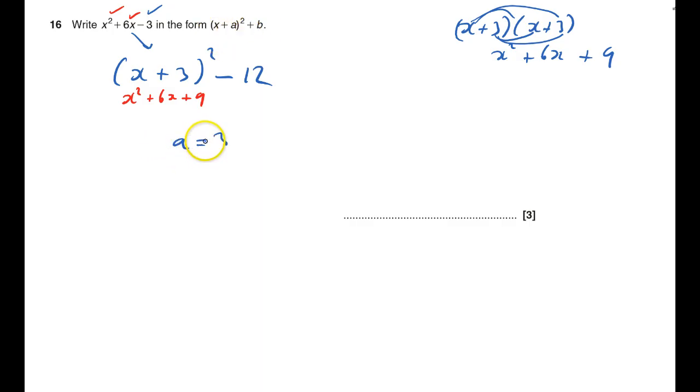a equals three and b equals negative twelve and that's all there is to this one for the three marks.